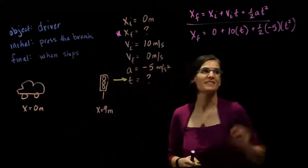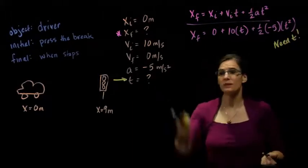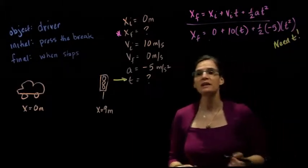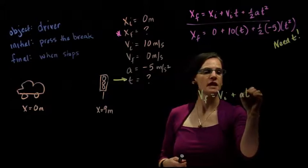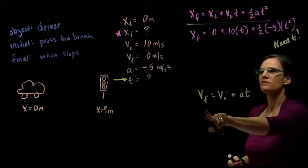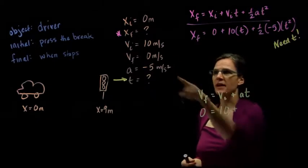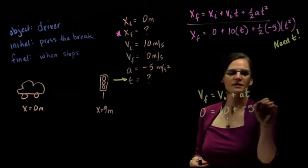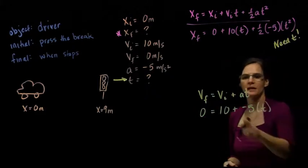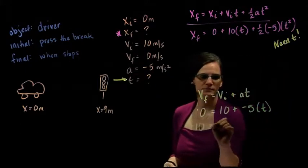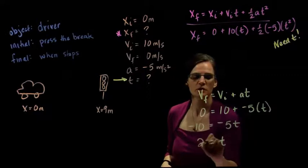So, now, in order for us to answer this question, we need t. Alright, well, we have another equation to look at. v final equals v initial plus acceleration times time. v final, well that's 0. v initial, 10, plus my acceleration, negative 5 times t. So, I can use this equation to solve for my time. So, subtracting 10 from both sides, minus 5 times t, dividing by 5, and we find that t is equal to 2 seconds.